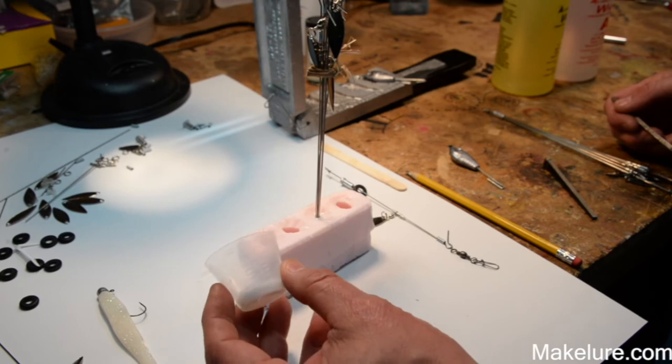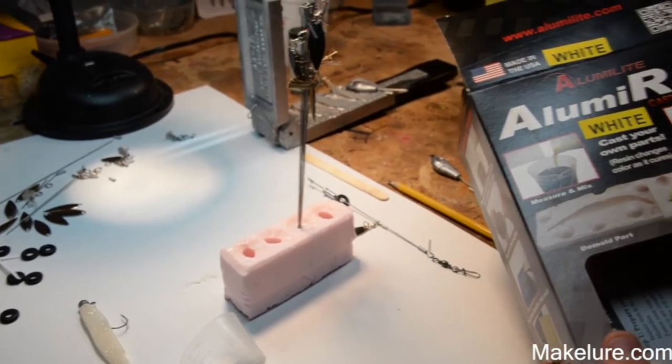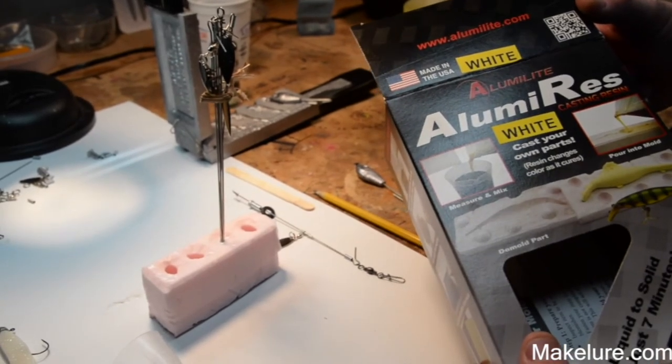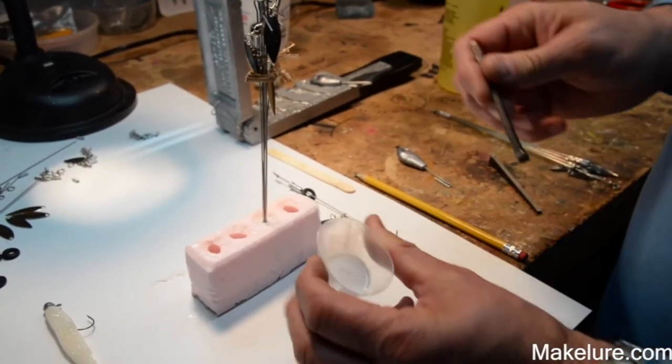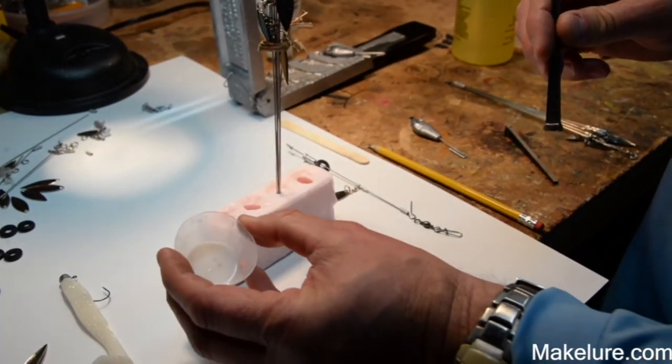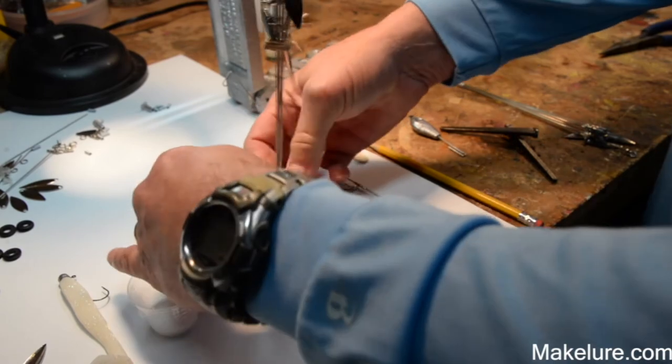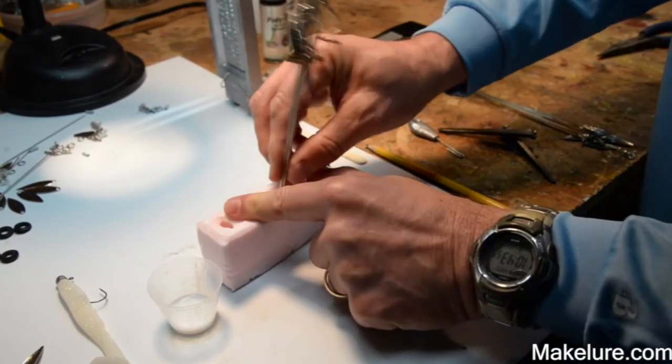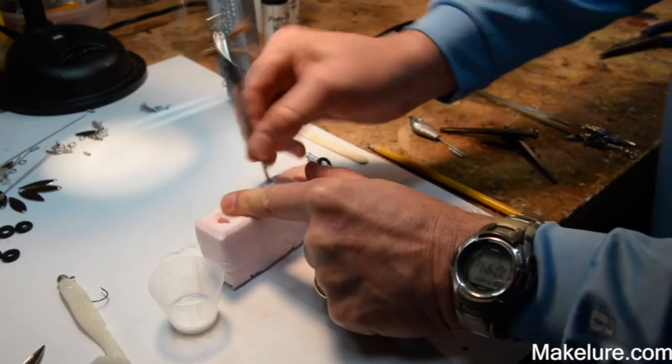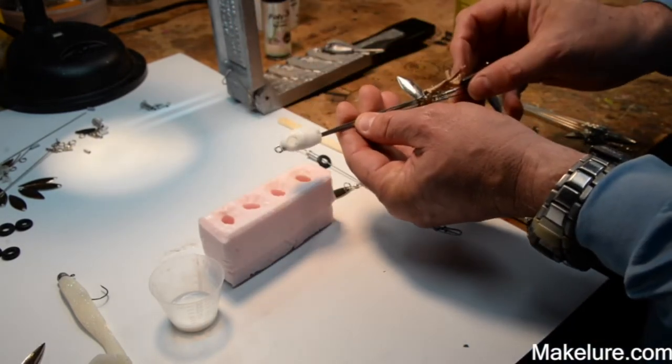So this is about 10 minutes later from the original pour. Remember this is a 50-50 mix of Make Lure's aluma-res, one of the most incredible hobby lure building products ever made. So we're going to break the mold here. When it turns milky white you can see how hard it is, it was completely liquid about 10 minutes ago. So I like to kind of break it a little bit in the mold, you can see it coming apart there and then I'll just ease it out. And now I'll have an A rig that's almost ready to go to the water.